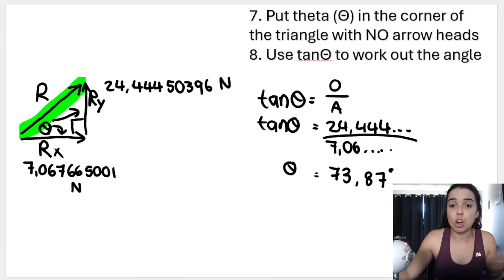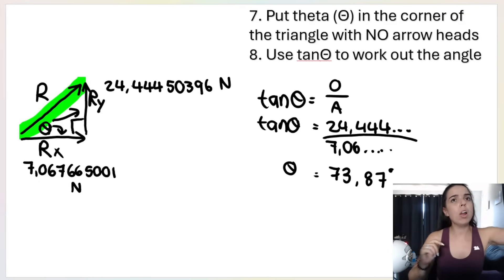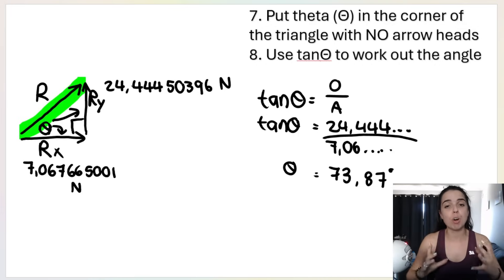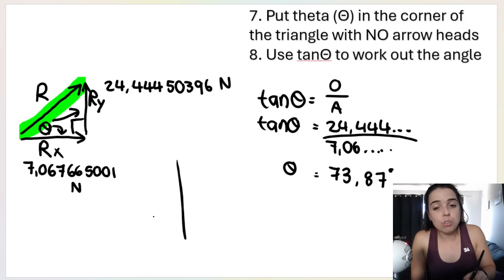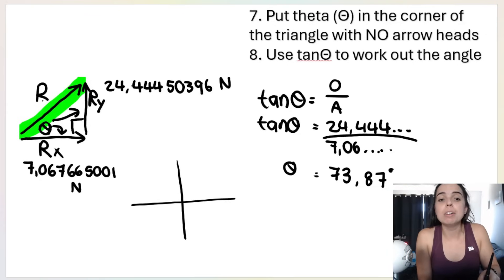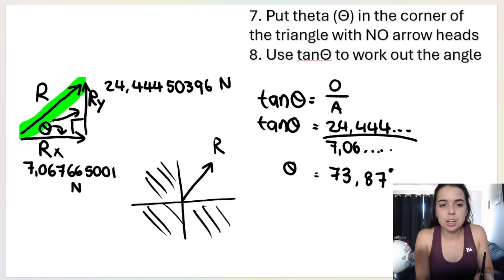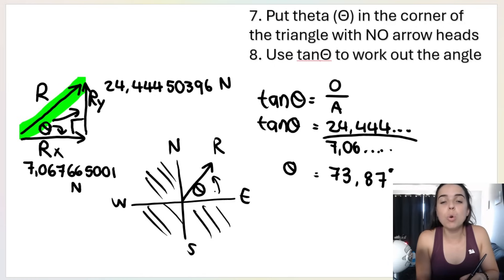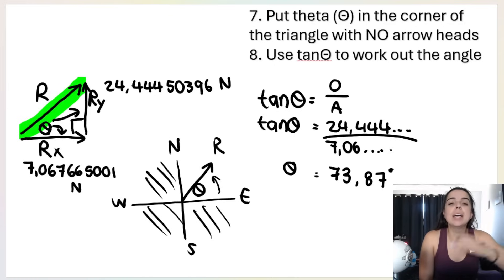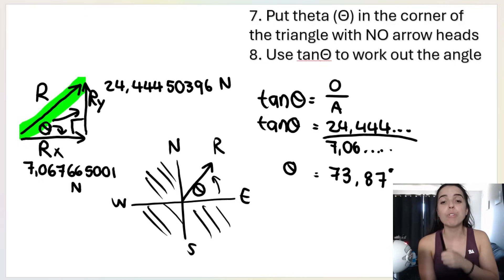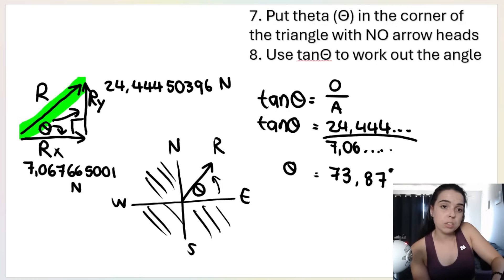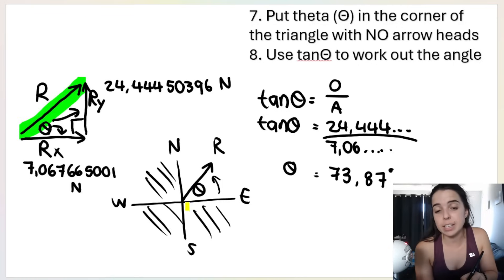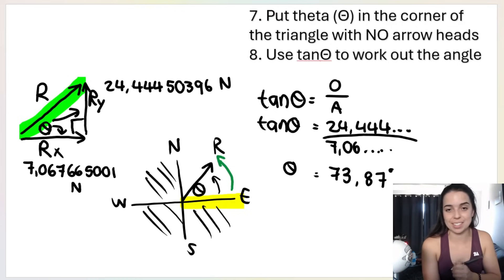You have to tell me if it's north of east, east of north, clockwise or anti-clockwise relative to the positive x-axis — you have to give a proper direction. R is going up and to the right, so it's in that quadrant. Theta is underneath my vector line. This vector is going to the north of east — if theta got bigger and bigger it would go further north of east, so it's north of east, not east of north. Alternatively, you can state the direction relative to the positive x-axis: 73.87 degrees anti-clockwise relative to the positive x-axis.